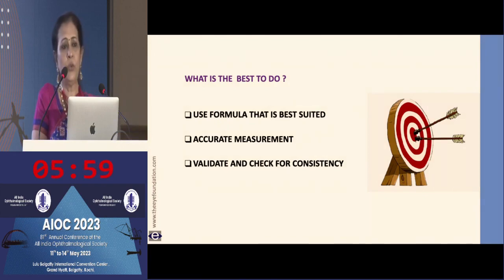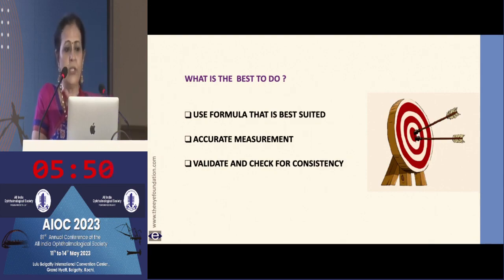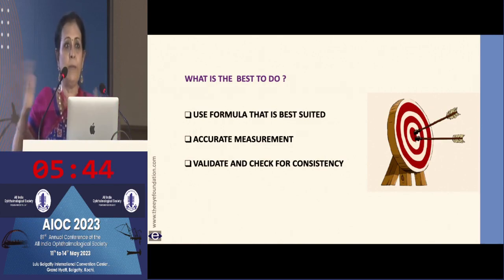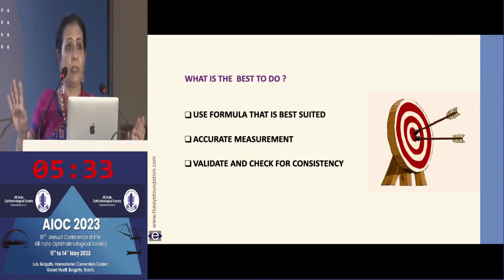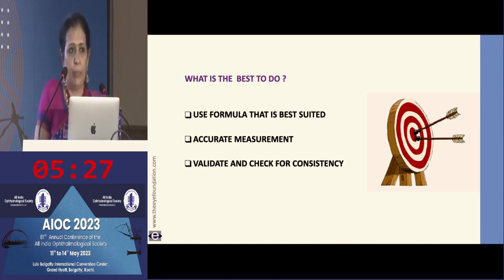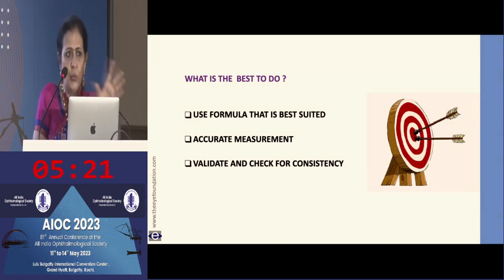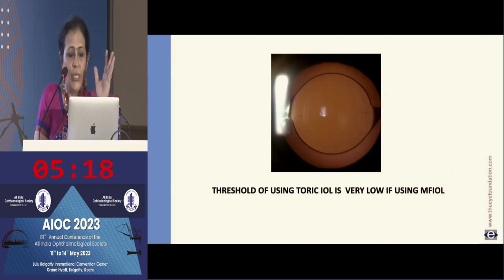You will hear about different formulas from different surgeons, but go back and use the formula best suited to you — and for that, you need to analyze your results. You might use Hill RBF and Barrett Universal 2 as two formulas to compare. The Hill RBF is based on a statistical model and Barrett Universal 2 on a thick-lens formula. Despite being different technologies, they work very well and are good platforms to validate IOL power calculations and check for consistency.